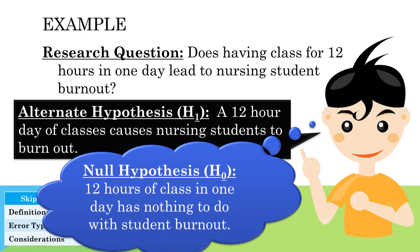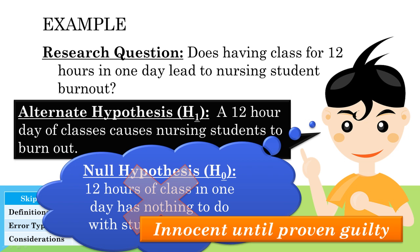The only way of backing up a hypothesis is to refute the null hypothesis. Instead of trying to prove the hypothesis that 12 hours of class causes burnout, the researcher must show that the null hypothesis is likely wrong. This rule means assuming that there is not a relationship until there is evidence to the contrary.